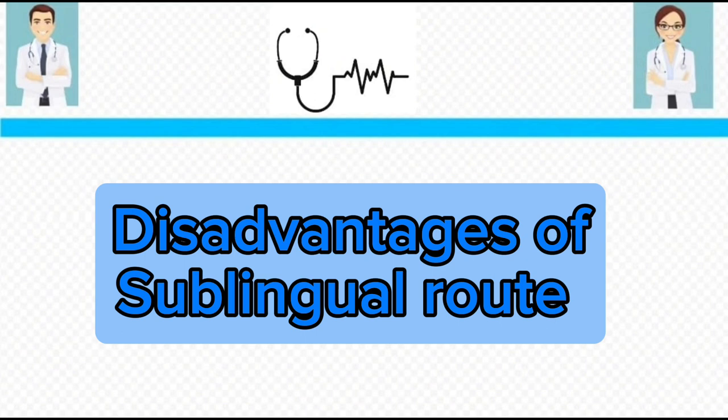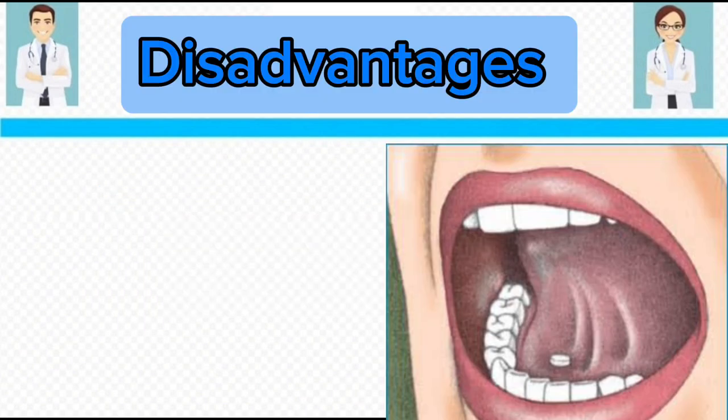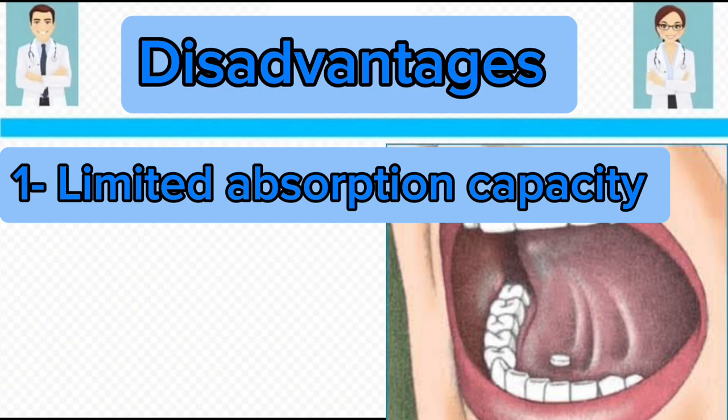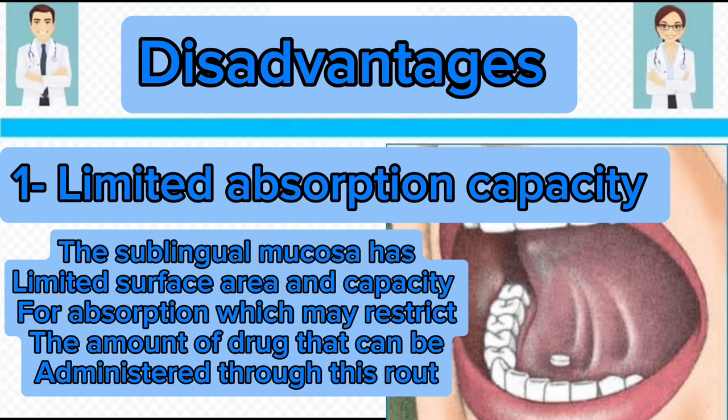Disadvantages of the sublingual route. First, limited absorption capacity. The sublingual mucosa has a limited surface area and limited capacity for absorption, which may restrict the amount of drug that can be administered through this route.